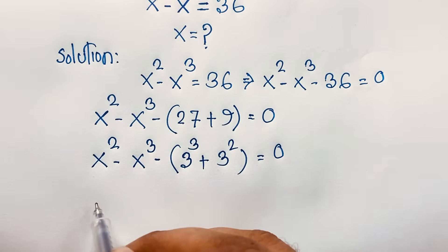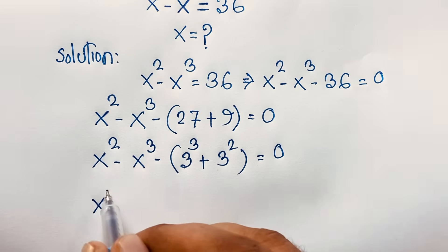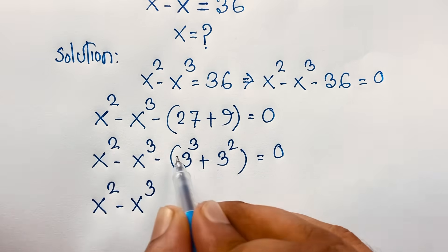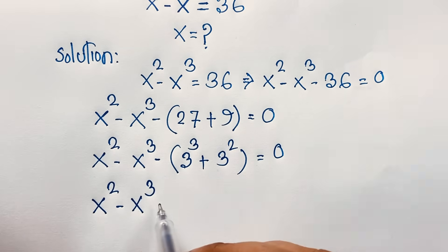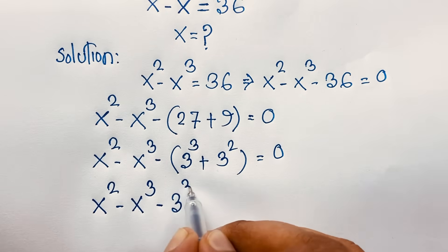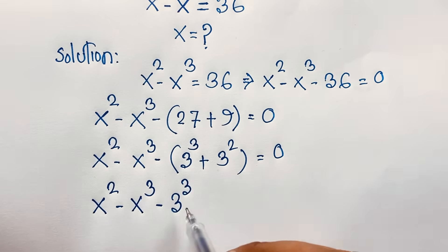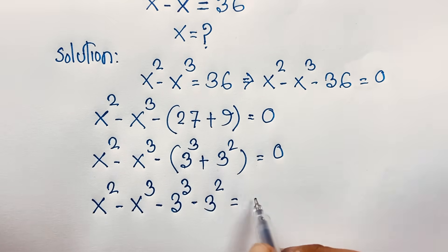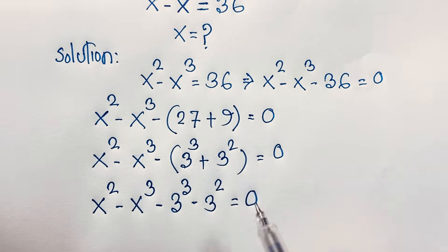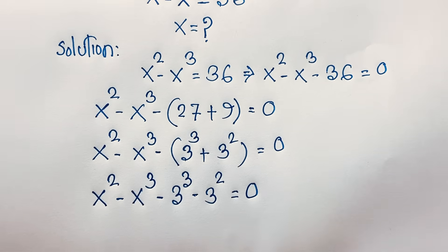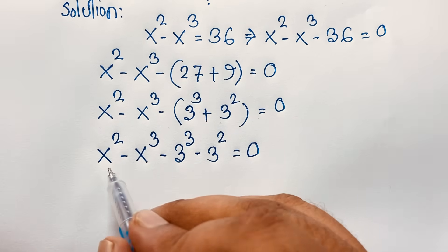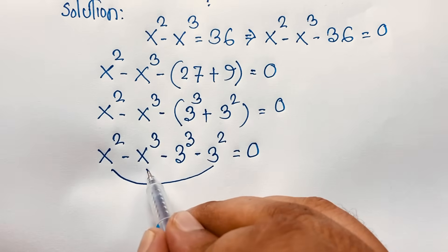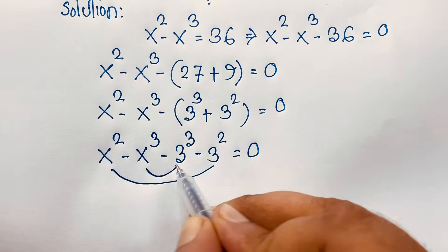So the expression becomes x squared minus x cubed minus 3 to the power 3 minus 3 to the power 2, equal to 0. I will solve this question step by step. Notice this is a square, this is a square, this is a cube, and this is a cube.